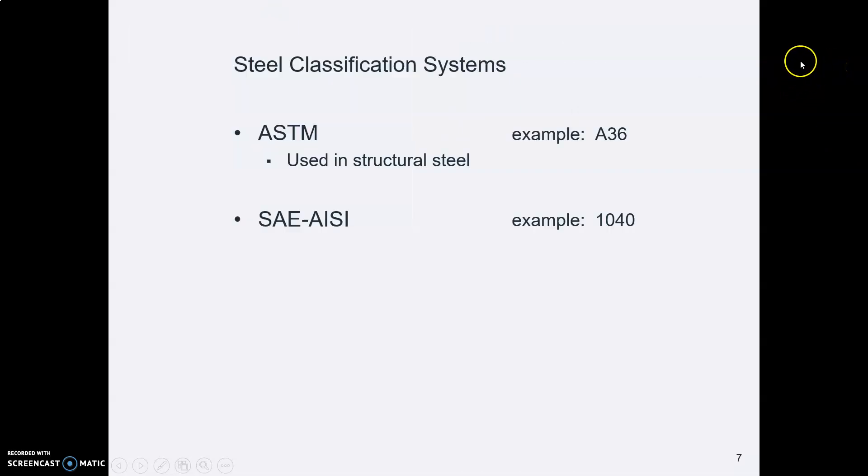Alright, now let's look at the classification systems for describing these metals. And there are two of them, ASTM and SAE-AISI. So let's just go through these.